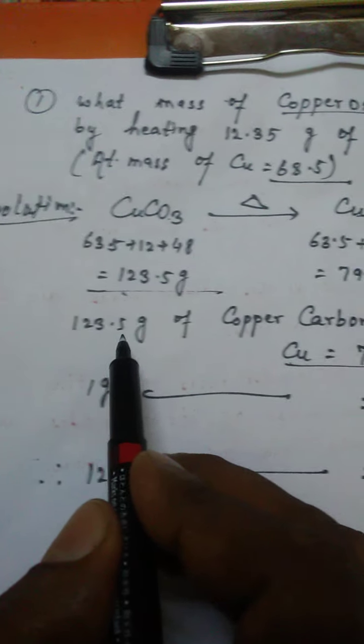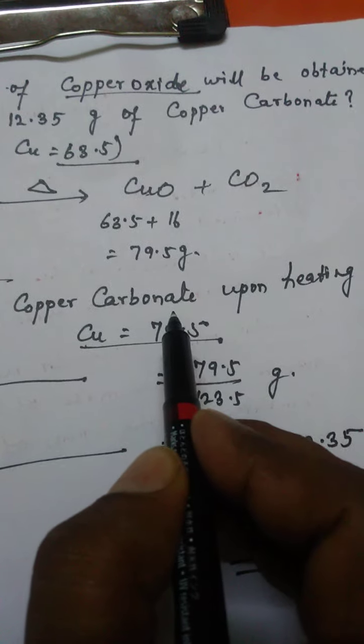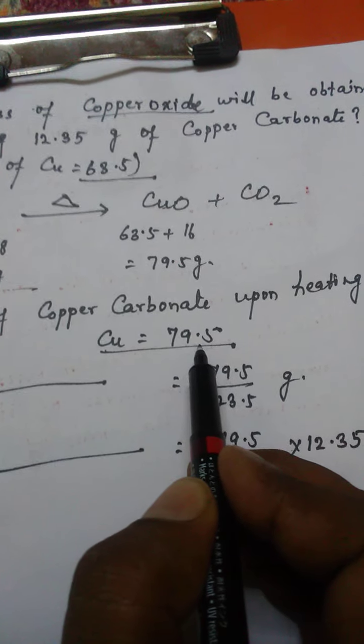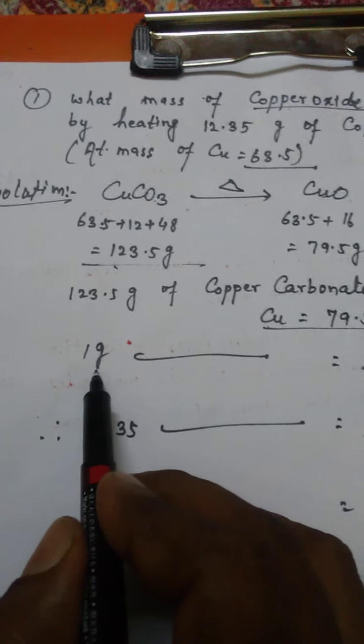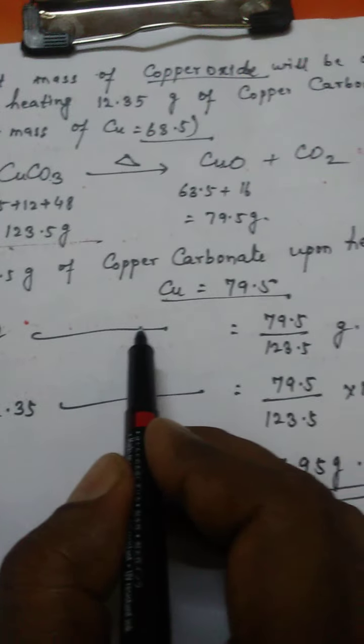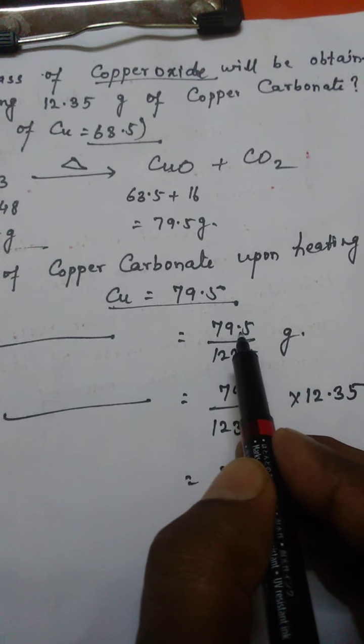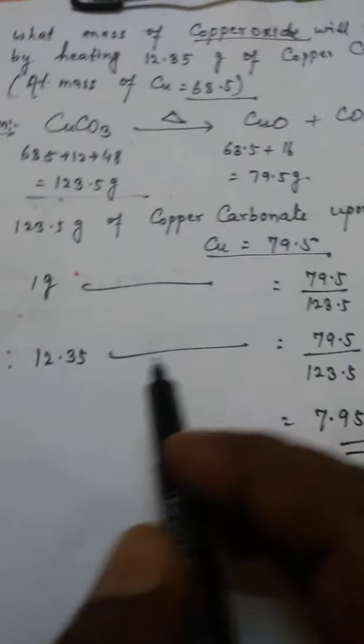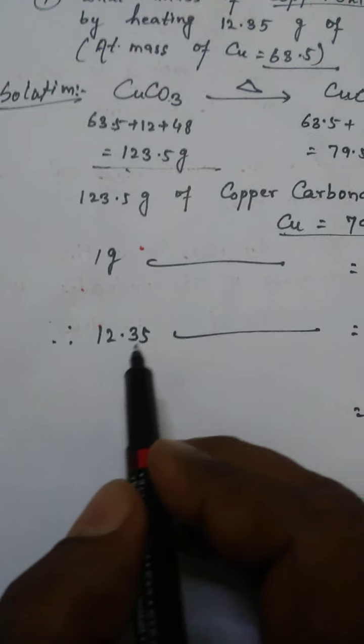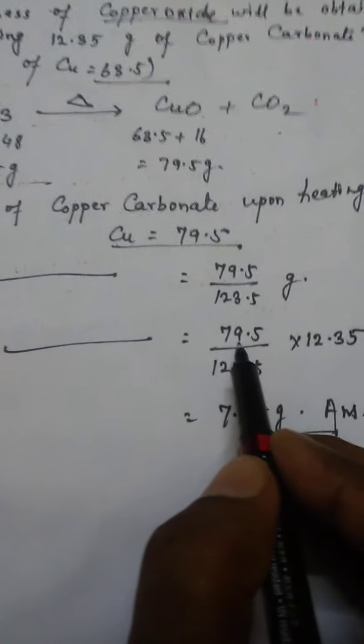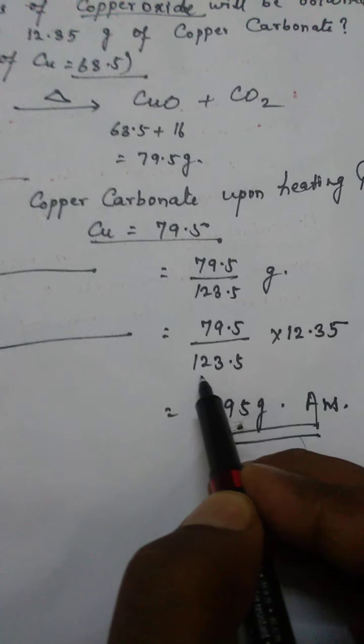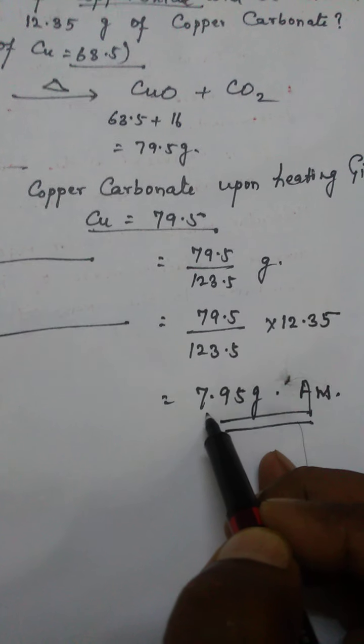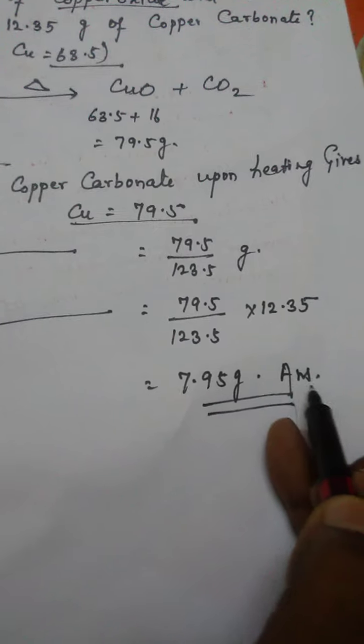123.5 grams of copper carbonate upon heating gives 79.5 grams of copper oxide. One gram of copper carbonate gives 79.5 divided by 123.5 grams. Hence, 12.35 grams gives 79.5 divided by 123.5 multiplied by 12.35, which equals 7.95 grams.